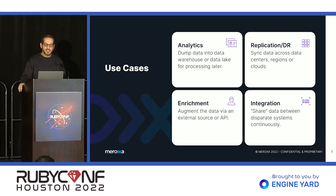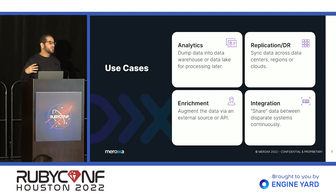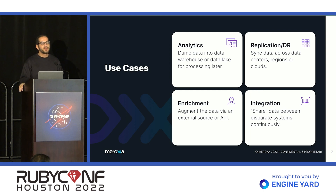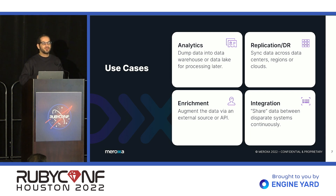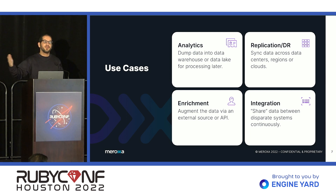Enrichment is another very common one. Essentially, you're taking some data — maybe a user signup — and you want to add additional information to make that data more useful. Maybe you look up their email with a third-party service that gives you more information like their company, role, and you take that enriched record and put it somewhere else, perhaps back in your operational database or data warehouse. Integration is a catch-all for taking your data and putting it somewhere else where it can be used by someone else — maybe scrubbing PII out of your stream and making it available for a partner.